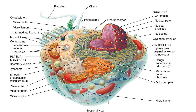Another thing we're going to look at is this orange thing right here, which is called the Golgi complex or Golgi apparatus. It's amazing how all of these organelles have their own job and their own roles inside the cell.